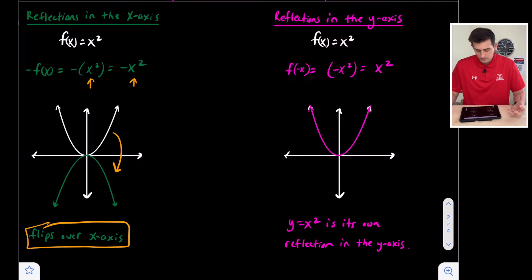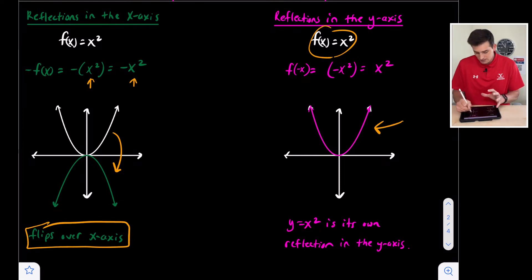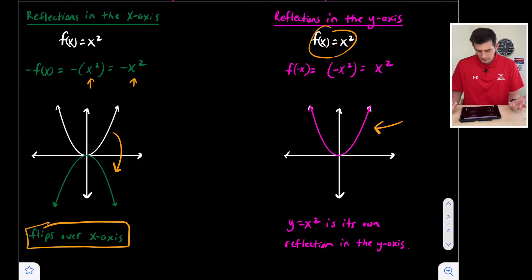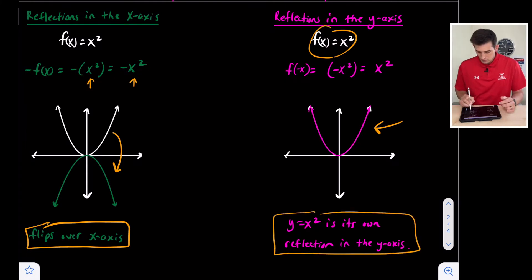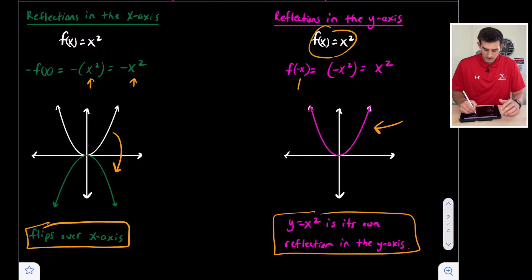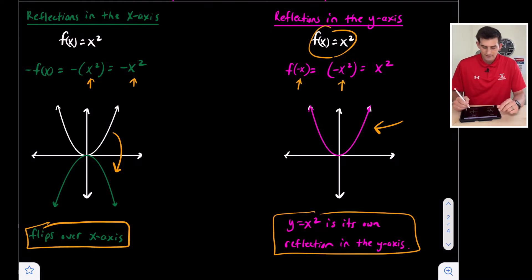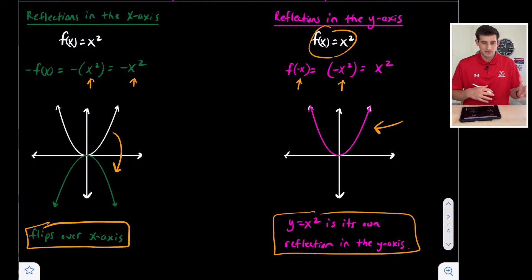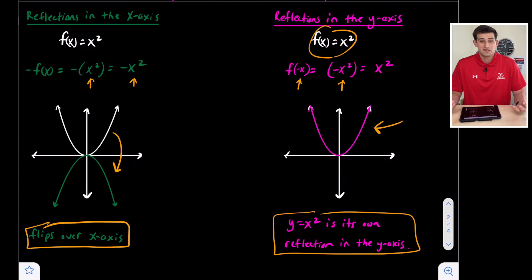For the y-axis reflection, we start with our parent function again. The white parabola and the pink reflected parabola are actually in the same place — y equals x squared is its own reflection in the y-axis. For a y-axis reflection, we make x opposite. So negative x, squared, becomes negative x times negative x, which equals x squared — a negative times a negative — so it just ends up being the same parent function, y equals x squared.